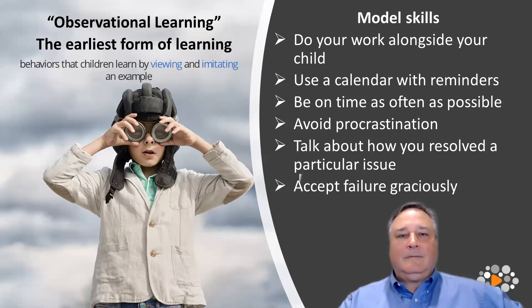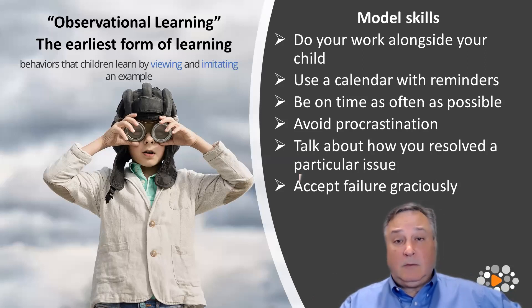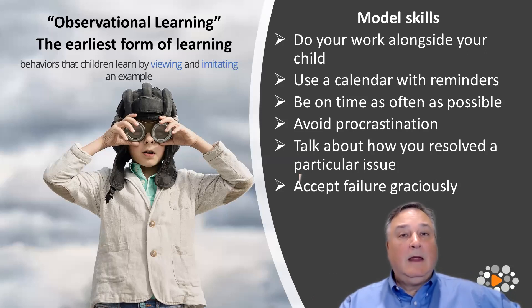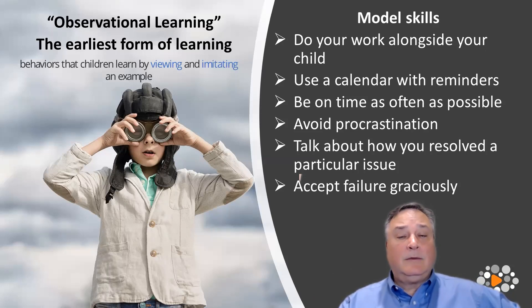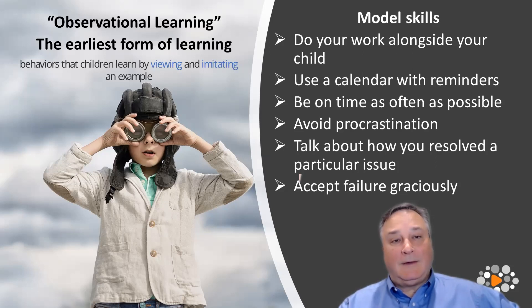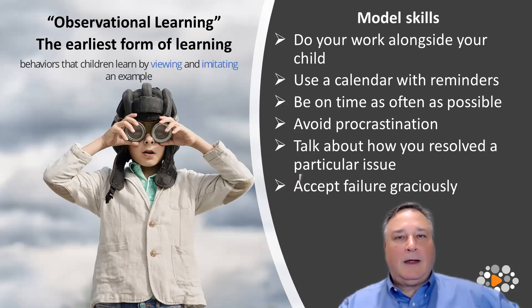The skill model: work alongside your child as they do homework. If you have work from the office, do it beside them — model focused work. If you're using your cell phone while they're doing their work, that's not a good idea. Maybe you're balancing your checkbook, creating a grocery list, or writing a letter. Do this together, because their first form of learning is observational learning, and they do it their entire lives.